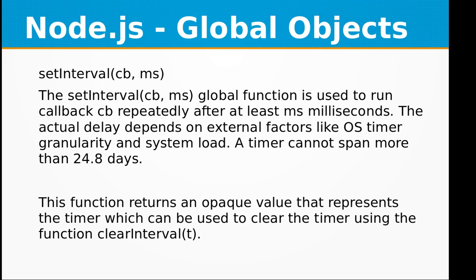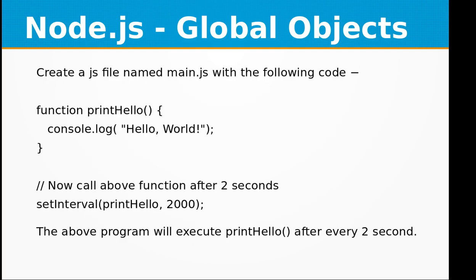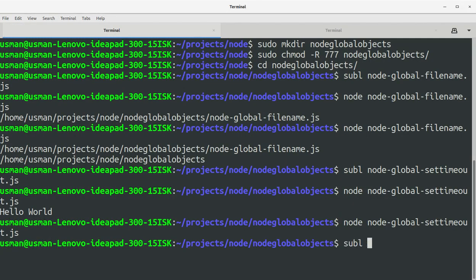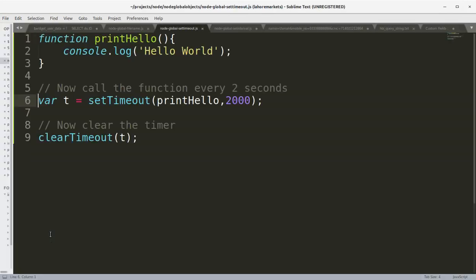The next global function is setInterval. It is used to run a callback repeatedly after at least the specified milliseconds. The actual delay depends on external factors like OS timer granularity and system load. A timer cannot span more than 24.8 days — it has approximately the same properties as setTimeout.